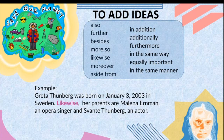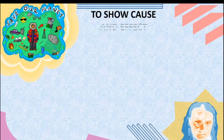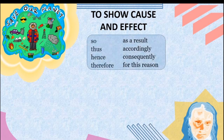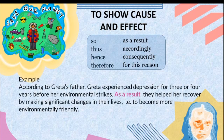Next function: to show cause and effect. Sample transitions include: so, thus, hence, therefore, as a result, accordingly, consequently, for this reason. Example: According to Greta's father, Greta experienced depression for three or four years before her environmental strikes. As a result, they helped her recover by making significant changes in their lives — specifically, to become more environmentally friendly. The cause is stated in the first sentence; the effect and transition 'as a result' appear in the second, showing a cause-and-effect relationship.